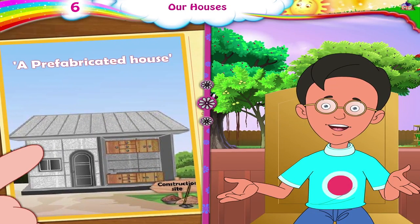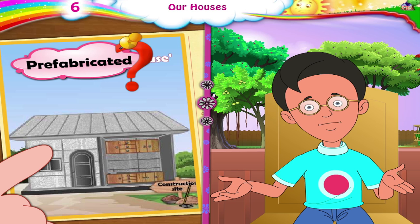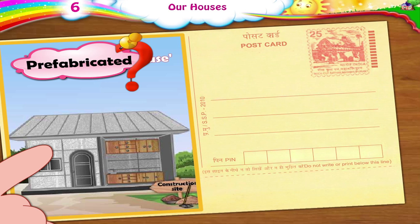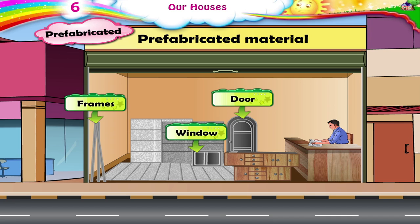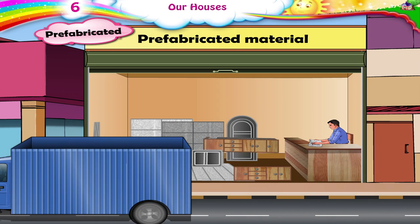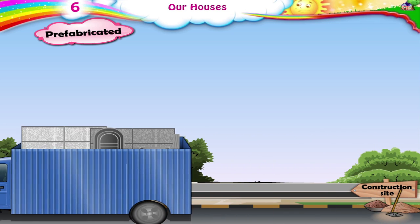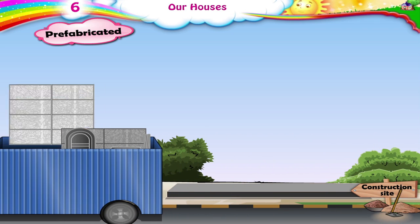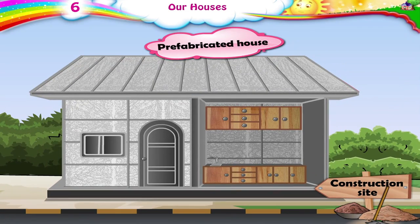Dadaji, this says 'prefabricated house.' What do you mean by prefabricated? The concept of prefabricated houses is becoming very popular today. Prefabricated means all the different parts — like the doors, windows, their frames, and kitchen platforms — are made ready in different places, and then carried to the construction sites. So, houses made by putting together different ready-made parts are called prefabricated houses.